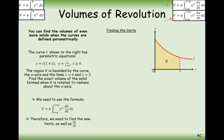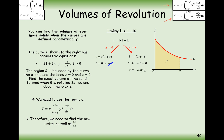First, find the new t limits. Taking x equals t(1 + t), when x = 0 we get t = 0 or t = -1, and since t > 0, t = 0. When x = 2 we get a quadratic giving t = -2 or t = 1, and since t > 0, t = 1. So our t limits are 0 to 1.